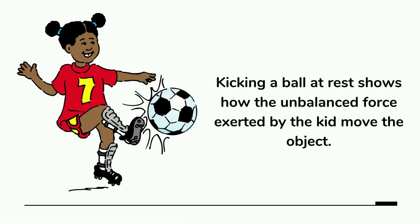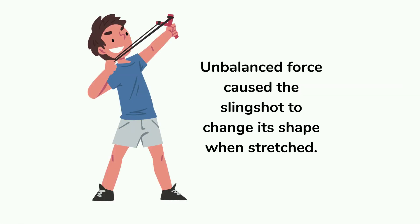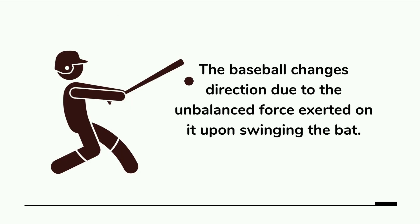For example, kicking a ball at rest shows how the unbalanced force exerted by the kid moved the object. Similarly, a slingshot changed its shape because of an unbalanced force. And a baseball changes direction due to the unbalanced force exerted on it upon swinging the bat.